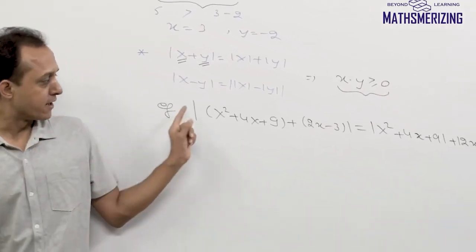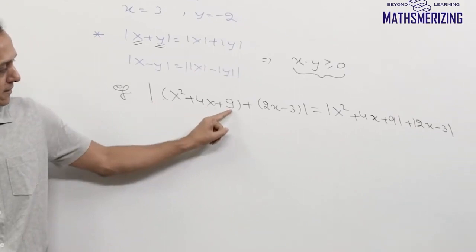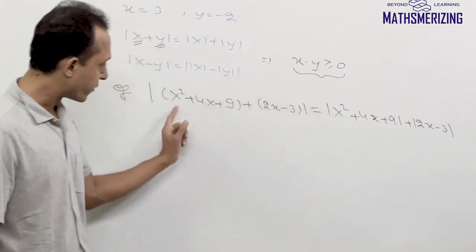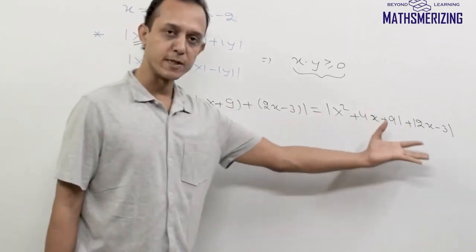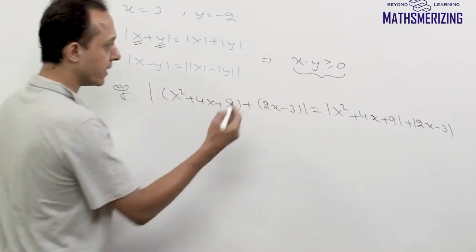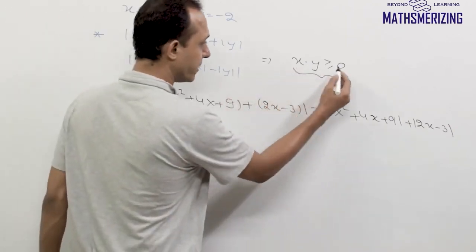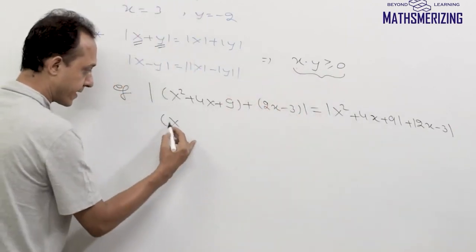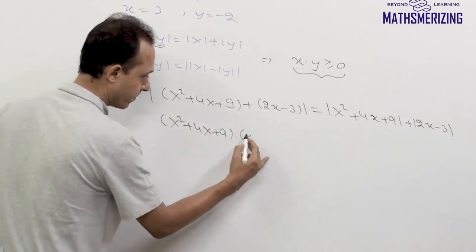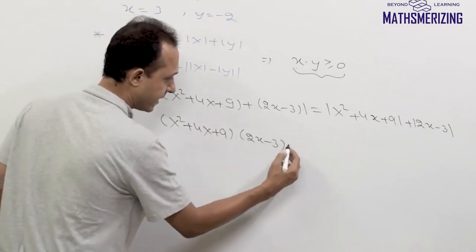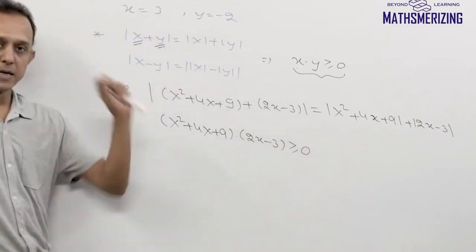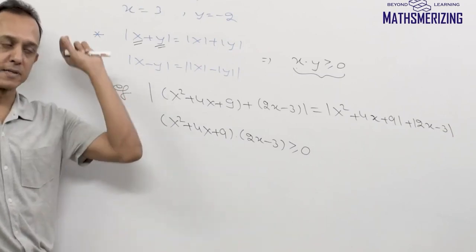For example, a question is given as |x² - 4x + 9| + |2x - 3| = |x² + 4x + 9| + |2x - 3|, which is of the form |x| + |y| = |x + y|. So the condition I get is x·y ≥ 0, which means (x² + 4x + 9)(2x - 3) ≥ 0. Now I need to solve this inequality.